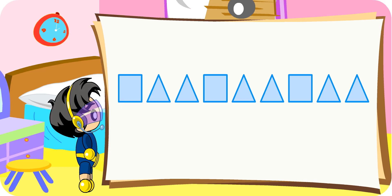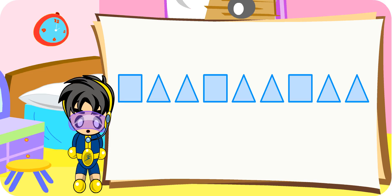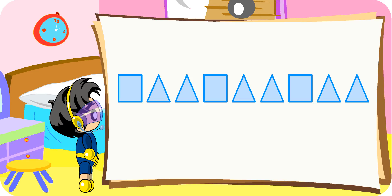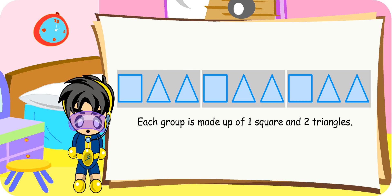Hmm, teacher, I think you have arranged the shapes in the wrong order. Look carefully, Turbo Boy. The shapes are arranged in groups and in each, there is a square and two triangles. Oh yes, I see it now.